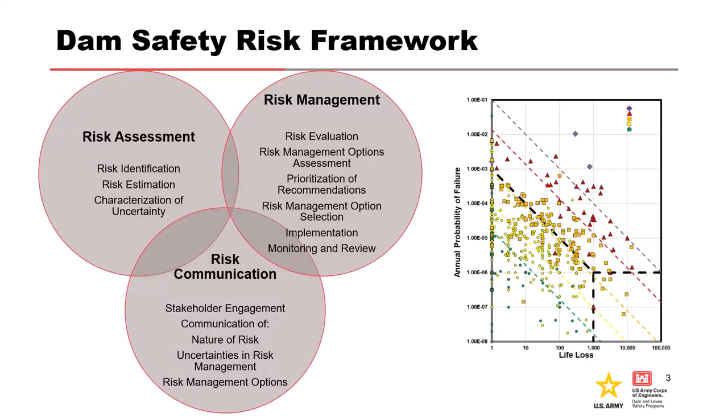According to ER 1156, a USACE engineering requirement, risk is defined as a measure of the probability and severity of undesirable consequences or outcomes. USACE uses the risk-informed process for the dam and levee safety program framework. We have somewhere around 700 dams and over 14,000 miles of levees. Other agencies like FERC are also moving toward these frameworks. There are three parts: risk assessment, risk management, and risk communication. For this course, when we're looking at coming up with the hazard loading curve, we're talking about that first piece — the risk assessment.